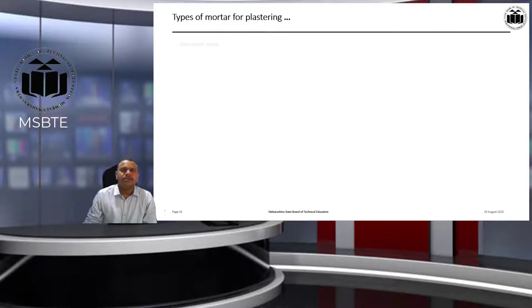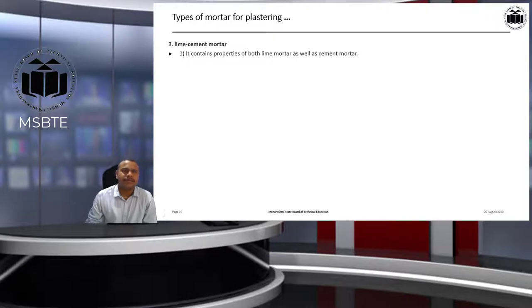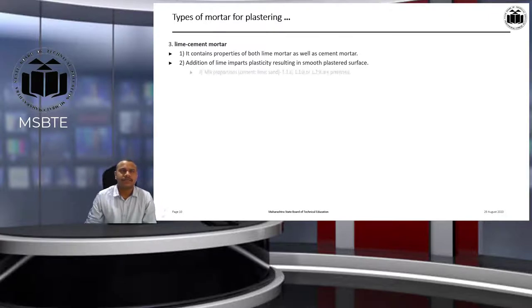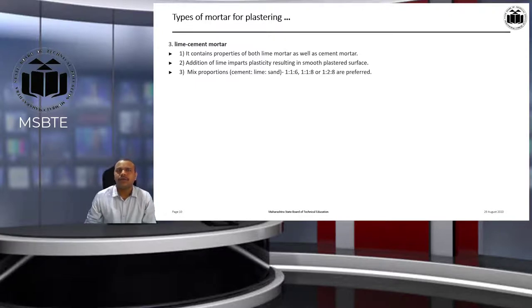The third type is lime cement mortar. It contains properties of both lime mortar and cement mortar. Addition of lime imparts plasticity, resulting in a smooth plastered surface. Mix proportions for cement to lime to sand are 1:1:6, 1:1:8, or 1:2:8.